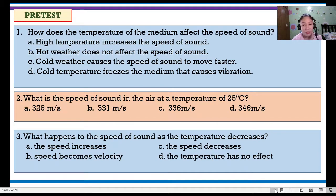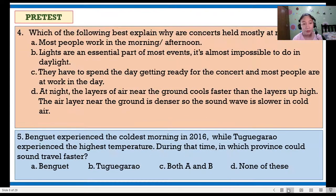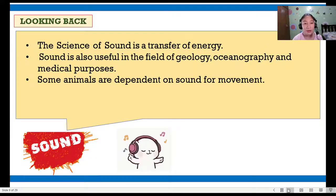Number 3, the answer is letter C. The speed decreases as the temperature decreases. For number 4, the correct answer is letter D. At night, layers of air near the ground cools faster than the layers up high. The air layer near the ground is denser, so the sound wave is slower in cold air. And last number 5, the correct answer is letter B. Tugigarau. All of these answers will be discussed today.